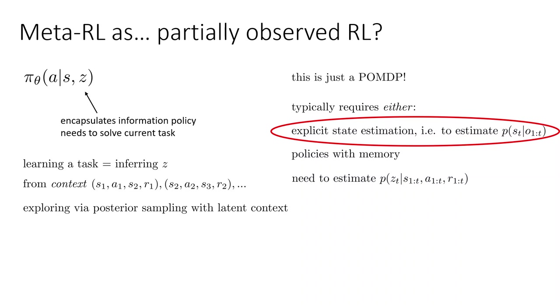And then once we've acquired it, then we can explore via posterior sampling with this latent context. So if you remember the discussion of posterior sampling from the exploration lecture, it amounts to sampling from our posterior belief, and then acting optimally under that belief. So the way that we'll sample is we will actually randomly select a Z from our posterior, and then we'll act according to that Z.